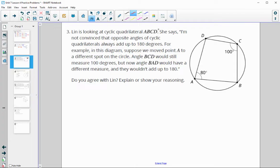Number three, Lynn is looking at a cyclic quadrilateral. She says she's not convinced that the opposite angles of a cyclic quadrilateral will always add up to 180 degrees. For example, in this diagram, suppose we move point A to a different spot on the circle. She says that BCD will stay 100, but angle A would change. So let's take a look and see if we agree with her or not.